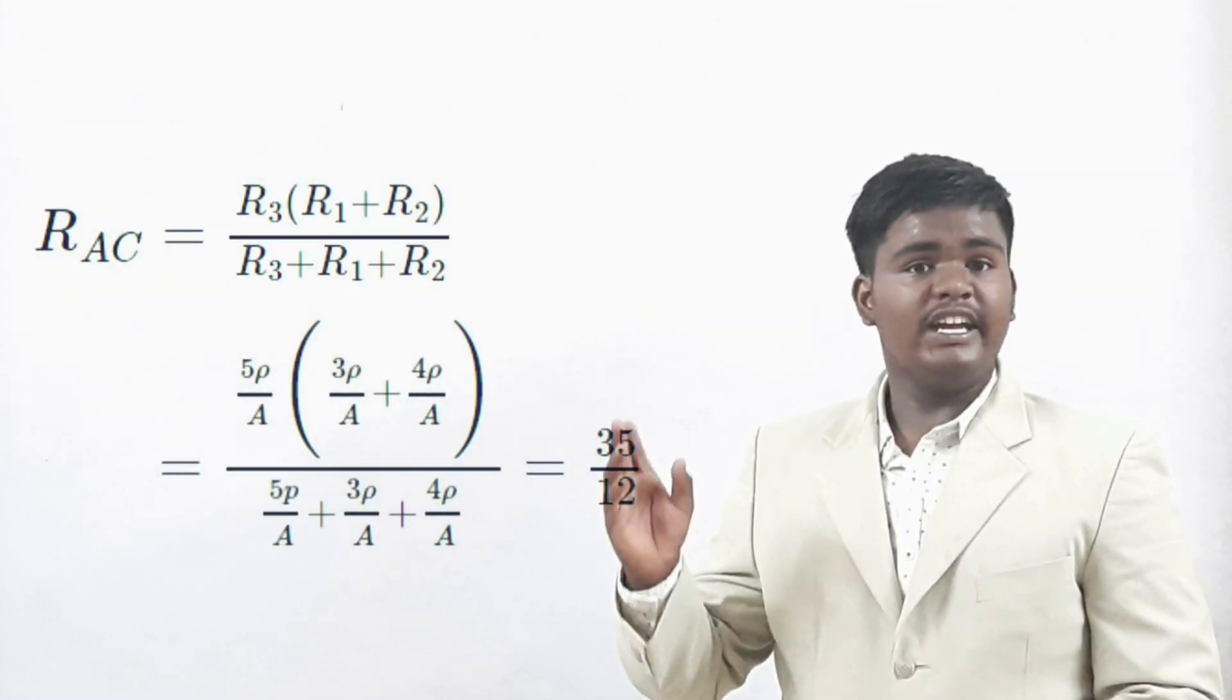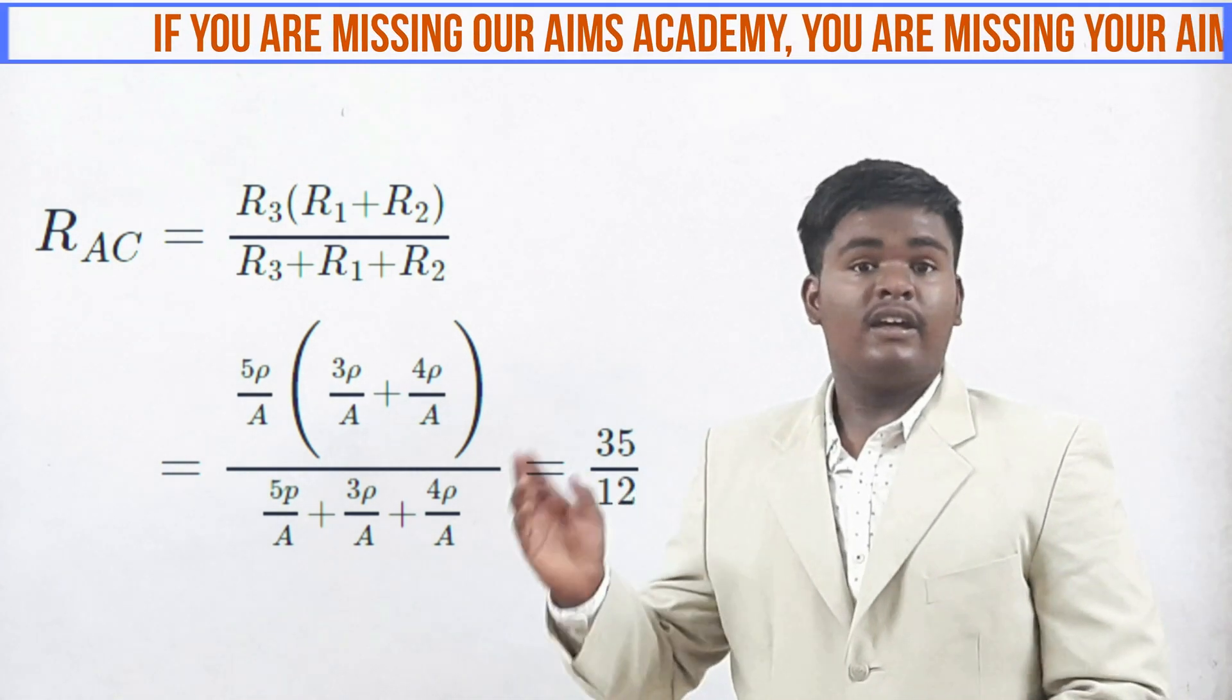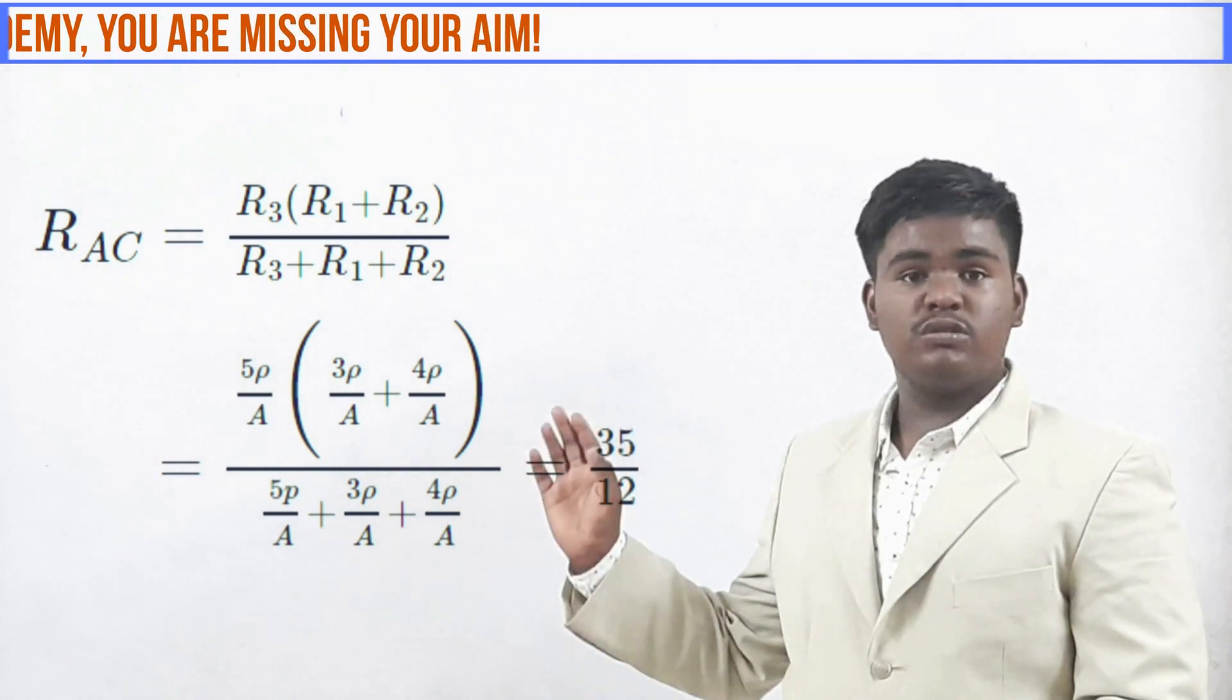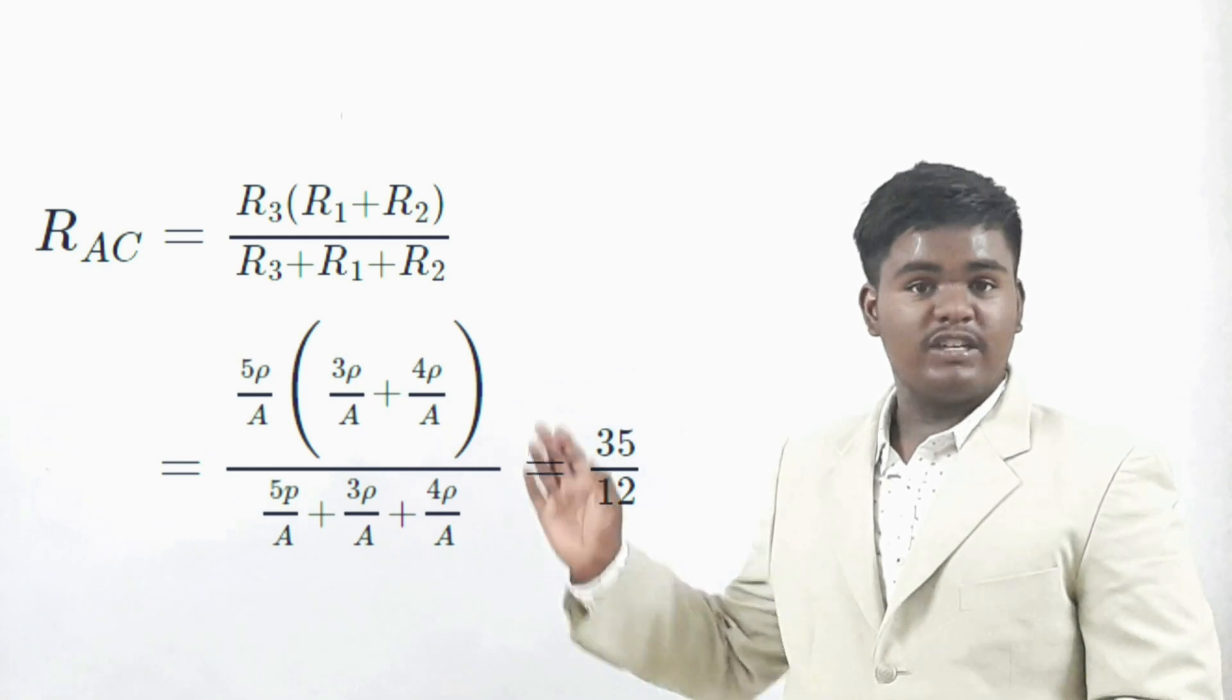RAC is equal to R3 into R1 plus R2 divided by R1 plus R2 plus R3. If we substitute the values of R1, R2 and R3, we get RAC is equal to 35 by 12.